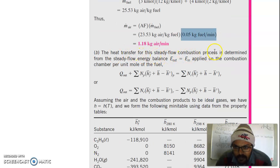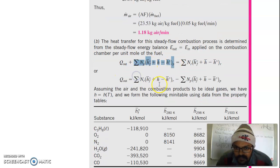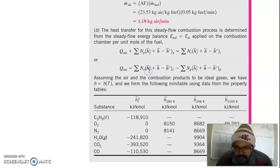The heat transfer for the steady flow combustion process is determined from the steady flow energy balance equation. Energy out equals energy in: the energy of the products plus heat out equals the energy of the reactants. So Q_out equals the sum of all reactant energies minus the sum of all product energies.